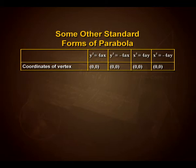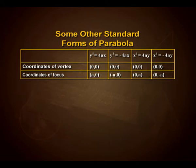The coordinates of focus for y² = 4ax are (a, 0). For y² = −4ax, the focus is (−a, 0). For x² = 4ay, the coordinates of focus are (0, a), and for x² = −4ay the focus is (0, −a).